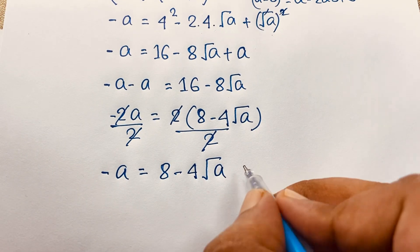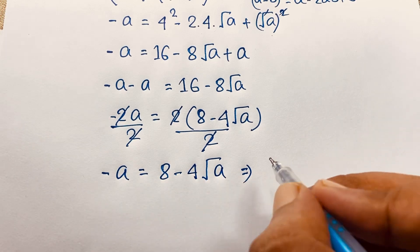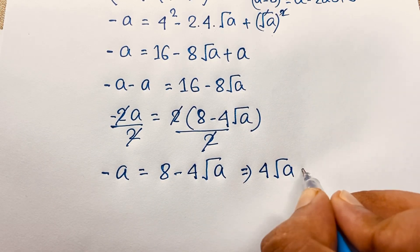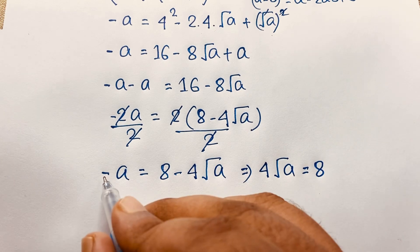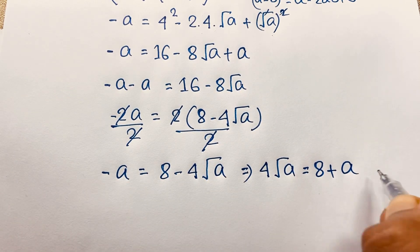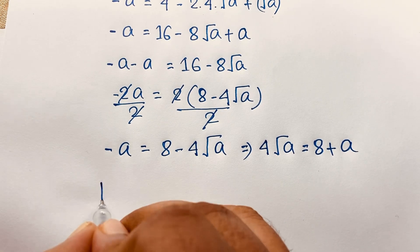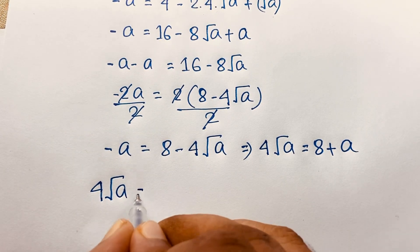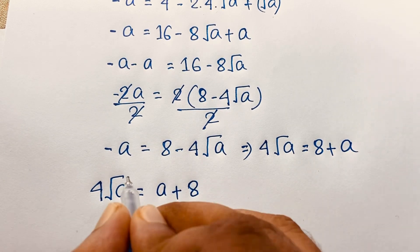Then from this expression, if I move the negative 4 to the other side it becomes positive 4 square root A, and if I move negative A to the other side it becomes positive A. So we find: 4 square root A is equal to A plus 8.